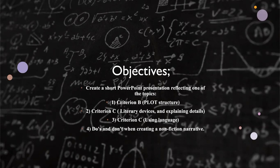The second lesson, you will create a short PowerPoint presentation reflecting one of the topics. I'm going to divide you into groups. Group A will do Criterion B, which highlights the plot structure. Group B will focus on Criterion C, which are literary devices, and explain in details.